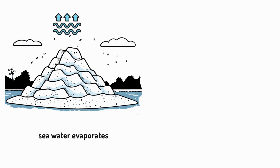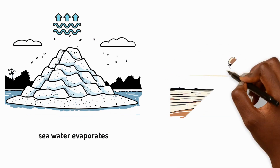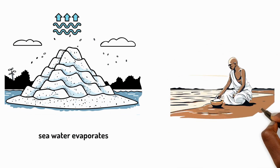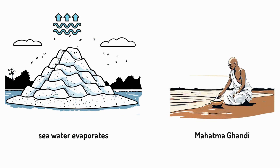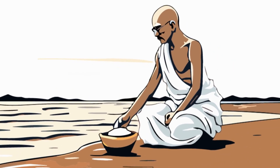A famous example of this is when Gandhi led a peaceful protest to collect salt from the sea. Even though it was against the law and many people were arrested, it helped change an unfair rule. This event showed how important it is for people to be able to make salt from evaporating sea water.